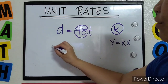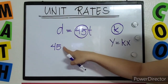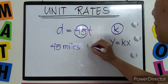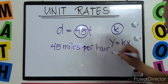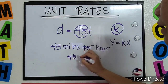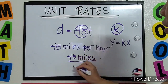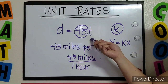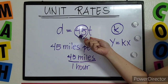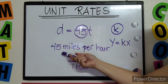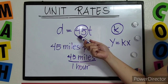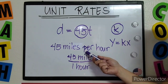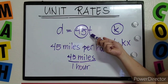Therefore, the unit rate is 45 miles per hour, or written as 45 miles over 1 hour. To find the unit rate from an equation, just look for the value of K. The value of K is your unit rate. In this example, K is 45, so the unit rate is 45 miles per hour — D is distance in miles and T is time in hours.